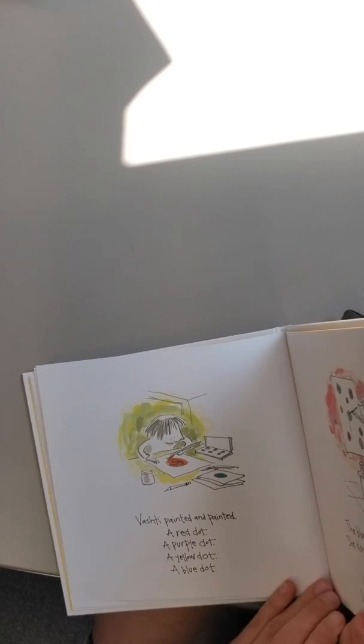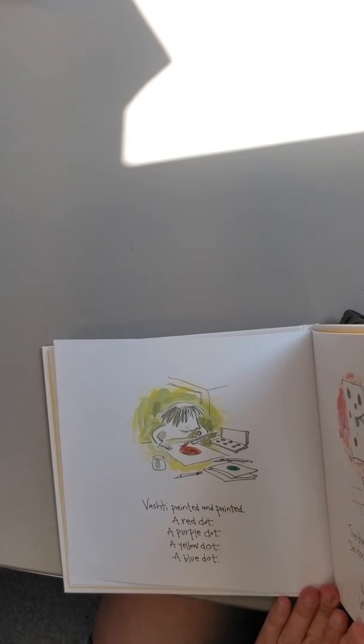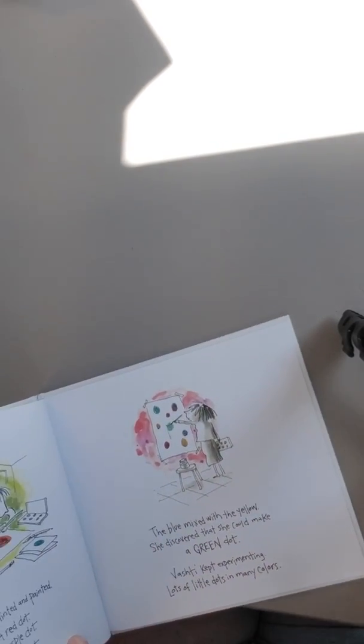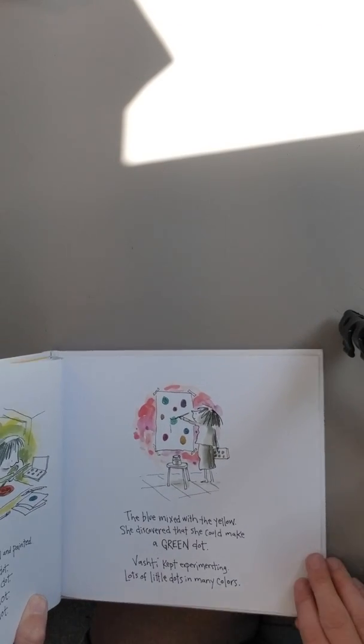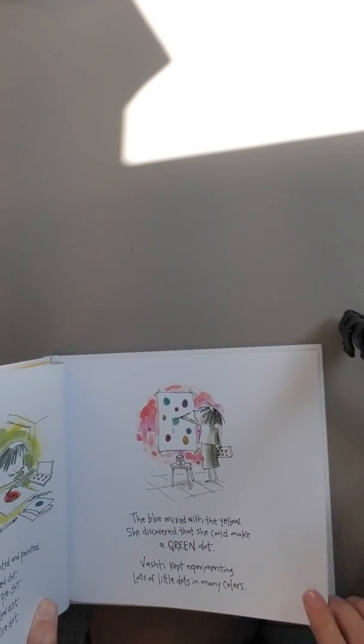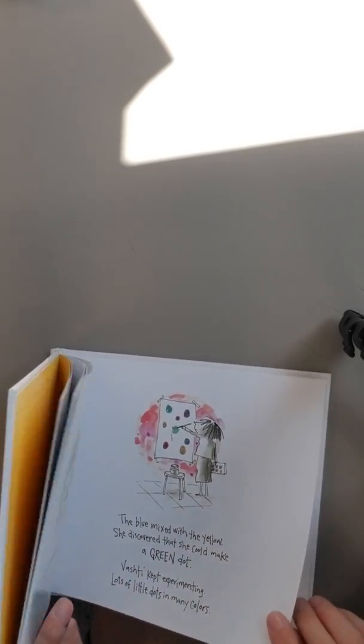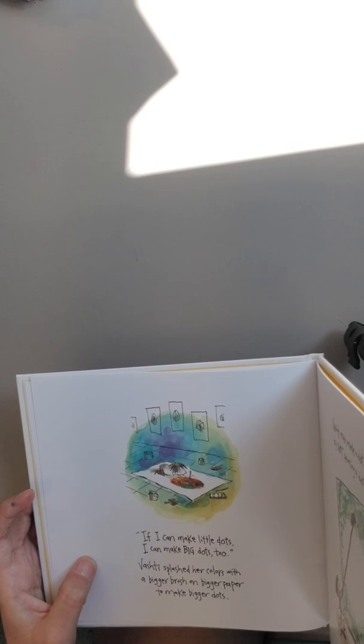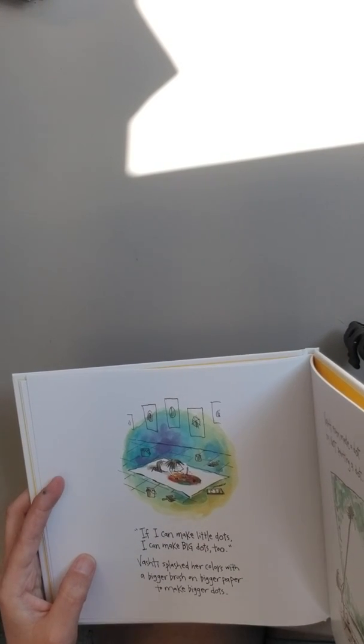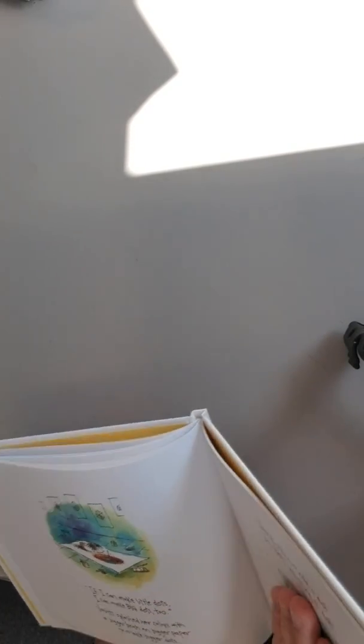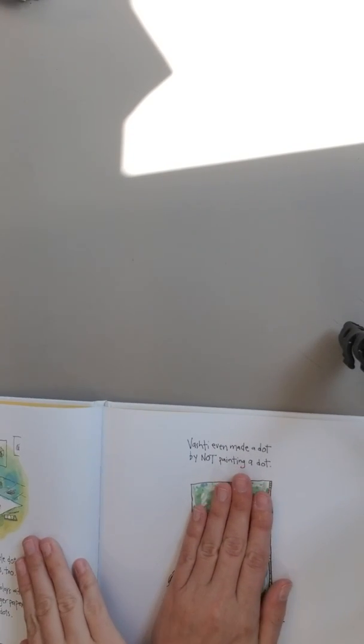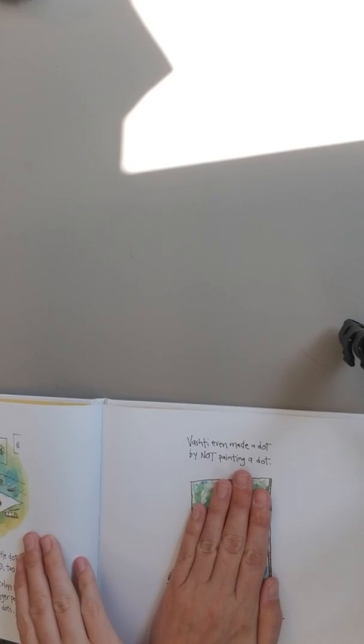Vashti painted and painted a red dot, a purple dot, a yellow dot, a blue dot. The blue mixed with the yellow. She discovered that she could make a green dot. Vashti kept experimenting lots of little dots in many colors. If I can make little dots, I can make big dots too. Vashti splashed her colors with a bigger brush on bigger paper to make bigger dots. Vashti even made a dot by not painting a dot.